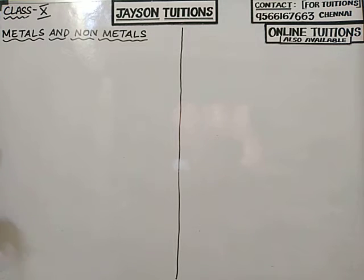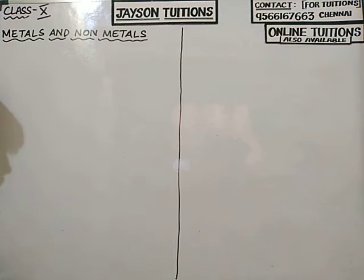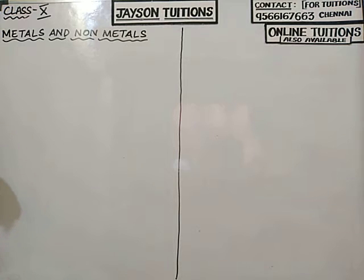In this class, we were discussing about chemical properties of metals. In that, we studied the reactions of metal with air — metal will react with oxygen to form metal oxides. Metal oxides can be soluble in water, and metal oxides are all basic in nature. In that, we studied about amphoteric oxides: aluminium oxide Al2O3 and zinc oxide ZnO.